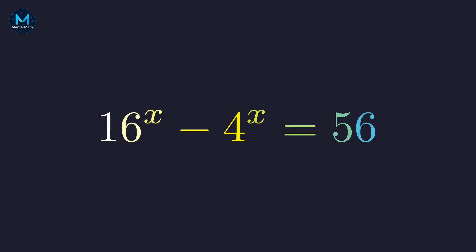Welcome back to Mental Math. Here's an exponential equation that looks intimidating at first: 16 to the x minus 4 to the x equals 56.